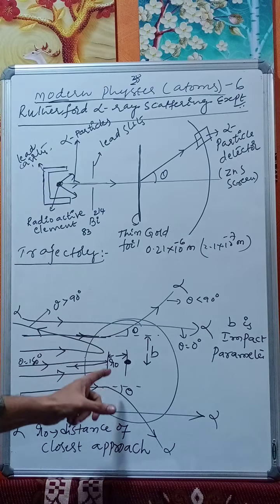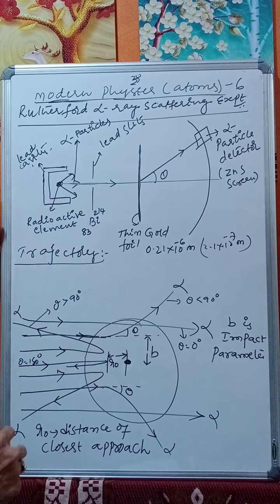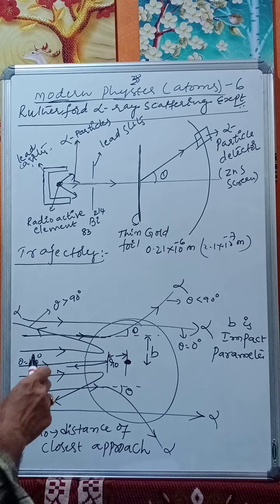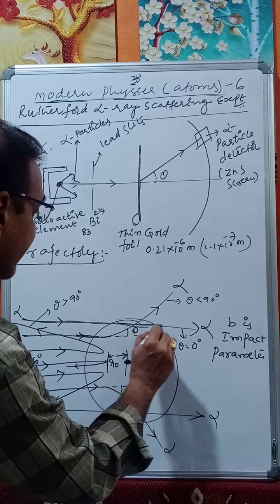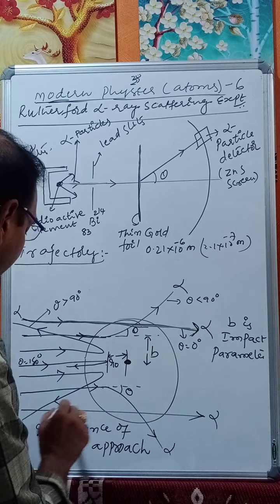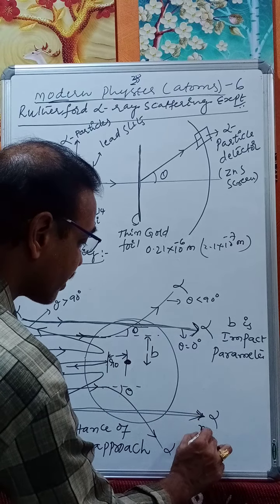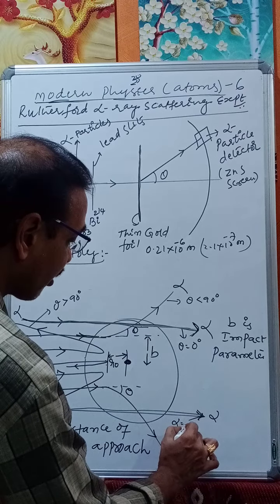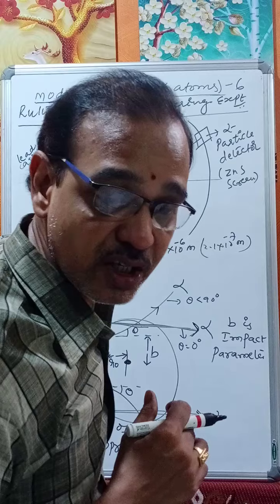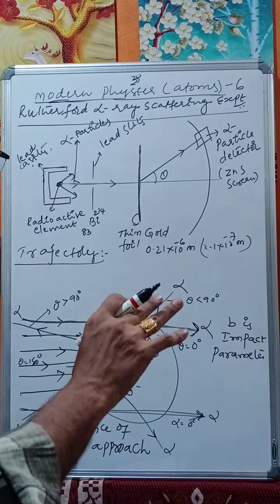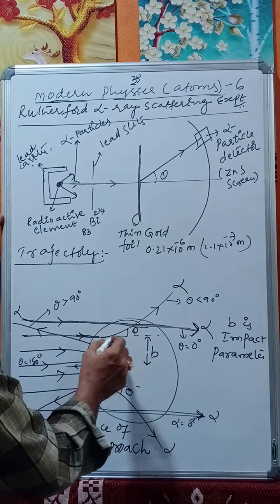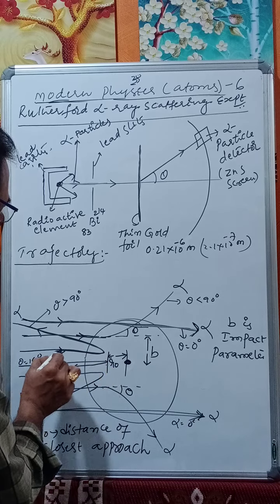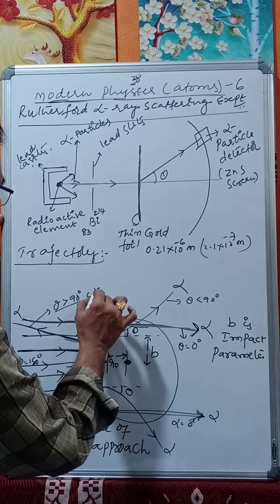The observations are: most of the alpha particles go undeviated, meaning the angle of scattering θ = 0°. A few alpha particles are scattered at angles greater than 90° and less than 180°. Some are scattered at angles less than 90°.